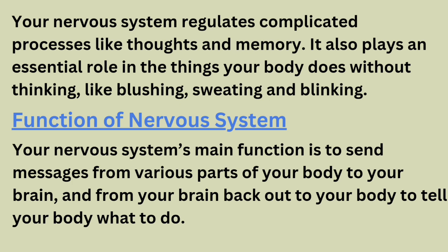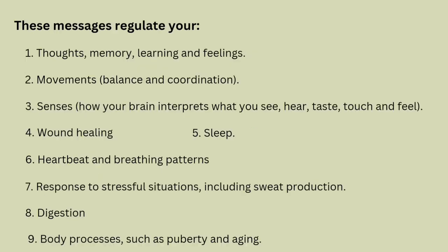The nervous system helps regulate both voluntary and involuntary processes. Its main function is to send messages from various parts of the body to the brain, and from the brain back to the body. It regulates thoughts, memories, movement, senses, sleep, healing, heartbeat, blood pressure, sugar response to stress, digestion, and other body processes.